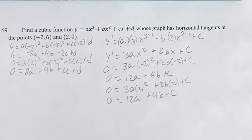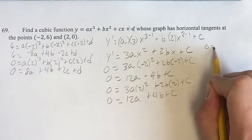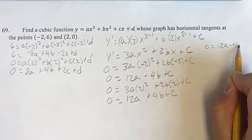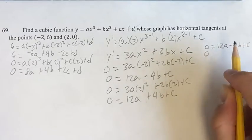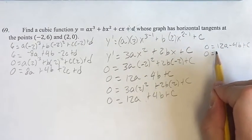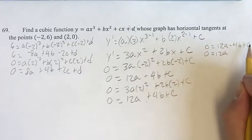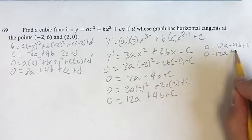Now, this is something we can deal with if we rewrite these equations right here. 0 equals 12a minus 4b plus c, and 0 equals 12a plus 4b plus c.